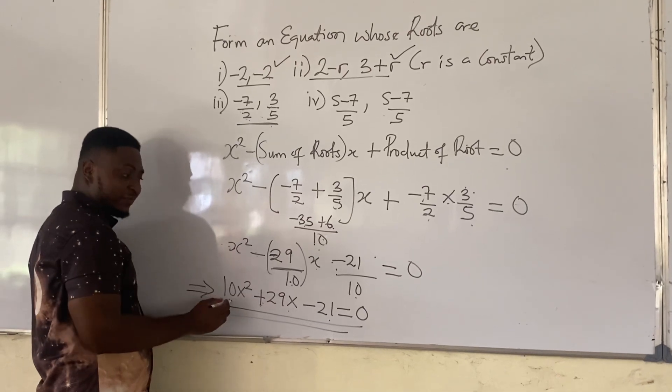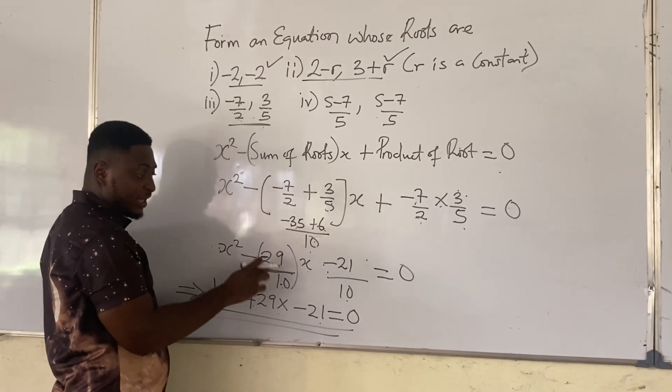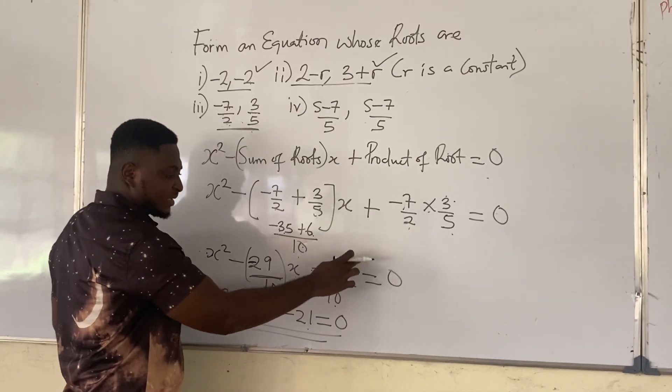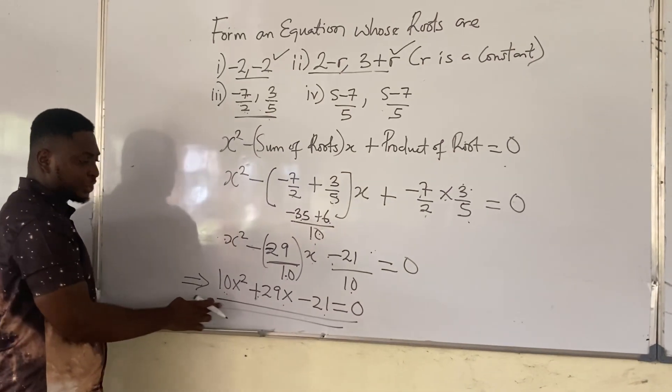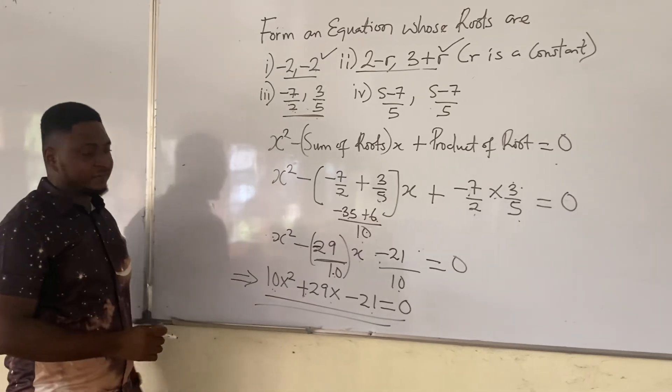And we multiply X squared by 10, you have 10X squared. Multiplying this side by 10, 10 will cancel the 10 on there. You have minus and minus is plus 29X. Multiply here by 10, 10 cancels 10, you have minus 21 equals 0. And this is the equation whose roots are minus 7 over 2 and 3 over 5. Thank you.